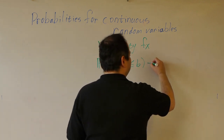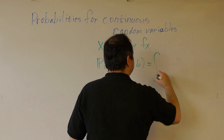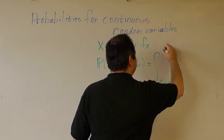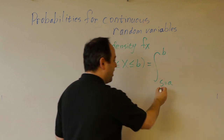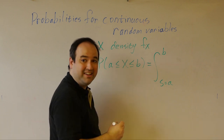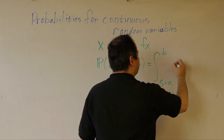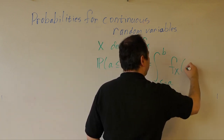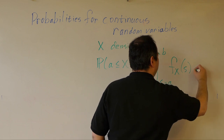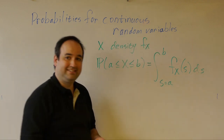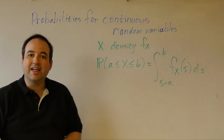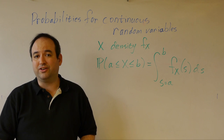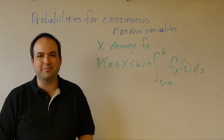That is, this probability is the integral as some dummy variable s runs from a to b of the density of the random variable evaluated at s. That's all there is to setting up your integral. Let's look at some examples.